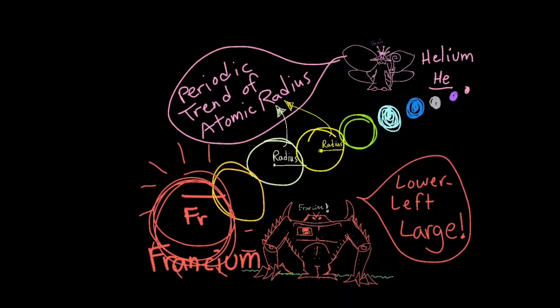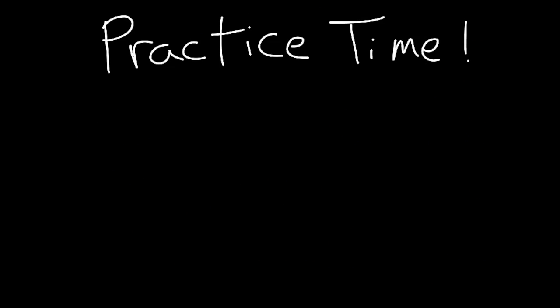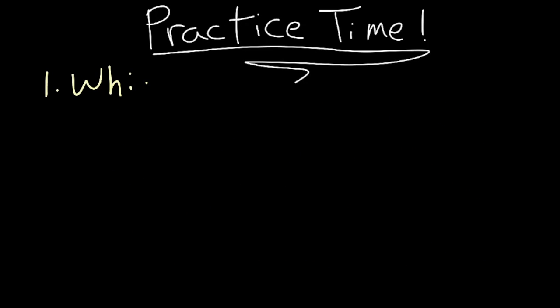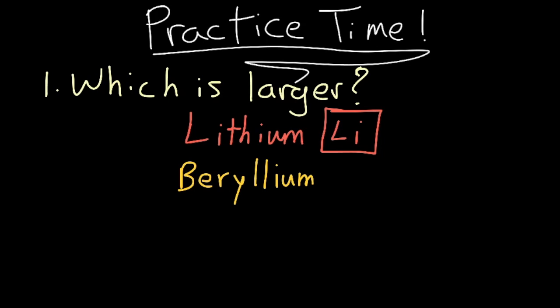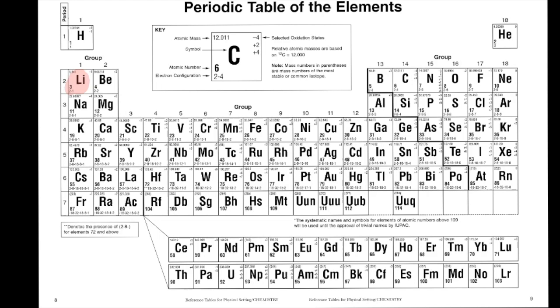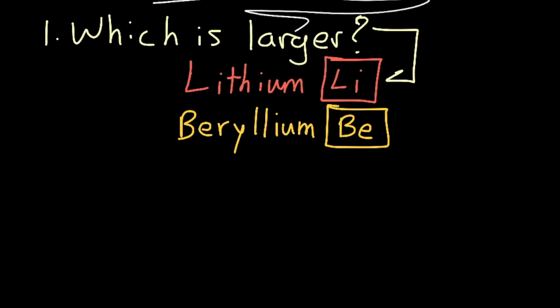Let's do a couple practice questions to test our knowledge. Number one, which element will have a larger atomic radius? Lithium, Li, or beryllium, Be? Hmm, well lithium is larger because it is closer to the lower left by being to the left of beryllium.